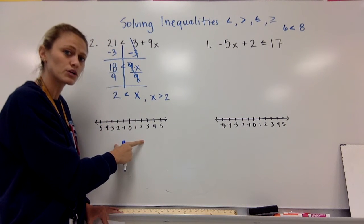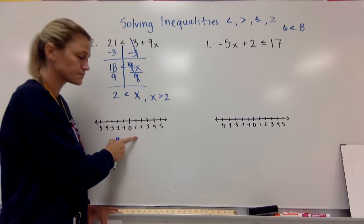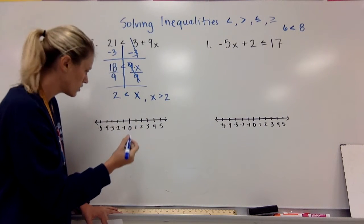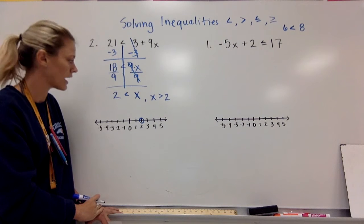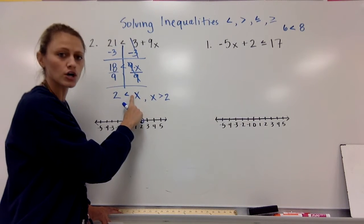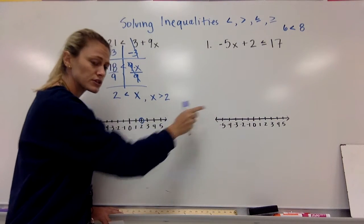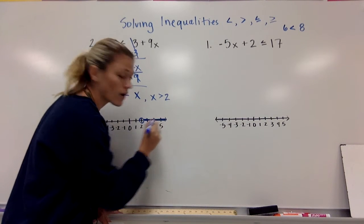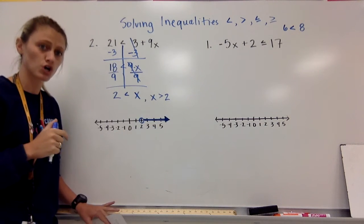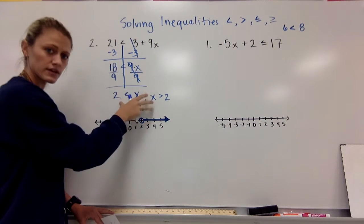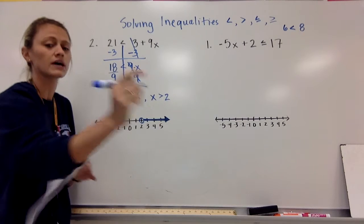Now that we've got our answer, we need to put it on a number line. I solve this the same way I solve an equation, but now we're going to add a new component — putting it on a number line. I've got 2 here, so I need to put a circle at 2. Notice I did not fill that circle in. x is bigger, and bigger numbers are toward the right, so everything bigger than 2 is okay. I'm going to shade in and put an arrow facing toward everything bigger than 2. I know x is bigger than 2, so I've got my circle at 2 and it's going toward the right.